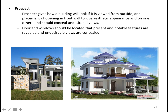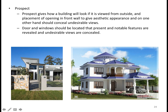The openings should be given in such a way that they conceal unwanted things and are provided in areas where they offer a good view. For example, if you have a river or a lake on one side of the building, a window or door can be provided on that side for a good view. Whereas if there is a waste dump on one side, that area should not be given any opening. That is the prospect of the building.